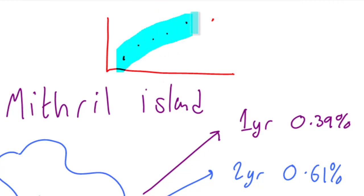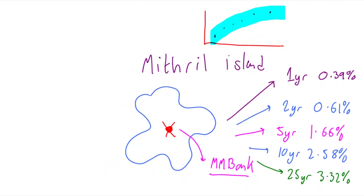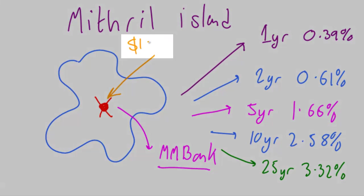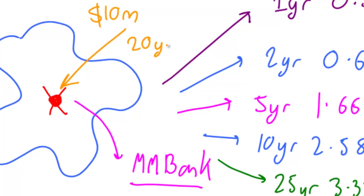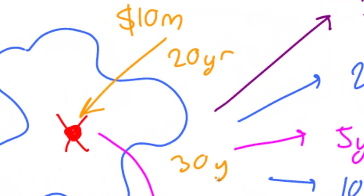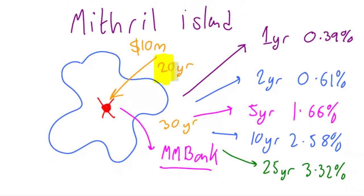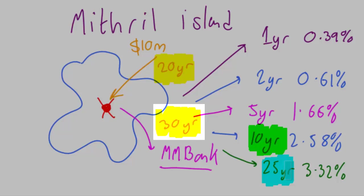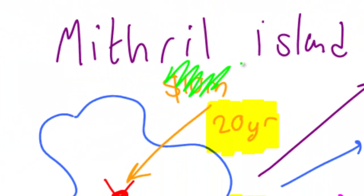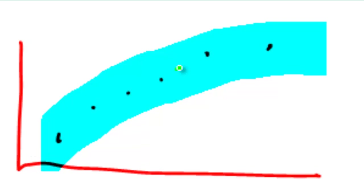We'd like a nice full curve because we have a client on the island, and to get 10 million dollars profit from this client we need a really good estimate for two things: the 20-year yield and the 30-year yield for Mithril Money Bank bonds. Unfortunately we don't have those figures — we've got the 10-year and the 25-year, but not the 20-year and not the 30-year. So are we going to lose the 10 million, or make a really good educated attempt at creating those missing points on the yield curve?